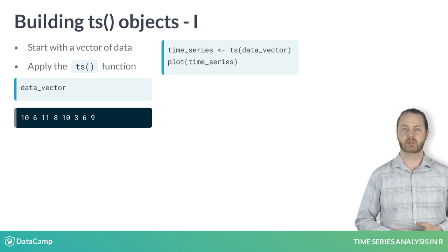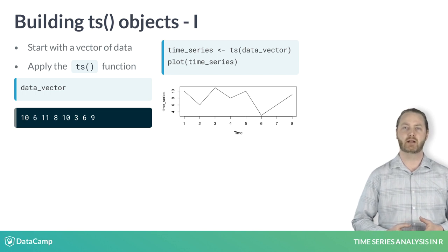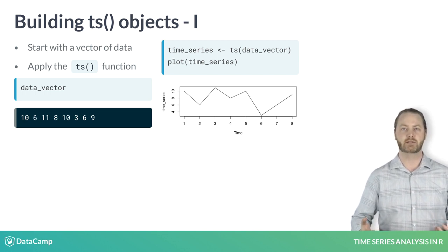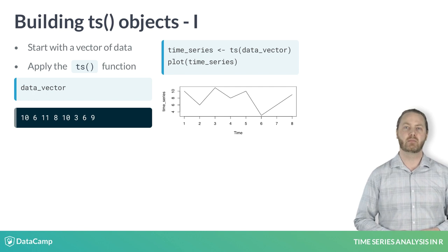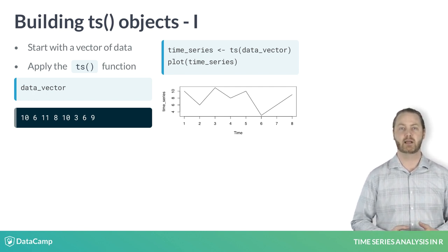When you plot the result using the plot function, the time index and label is automatically added to the horizontal axis. By default, R uses a simple observation index starting from 1 as the time index.